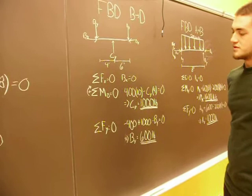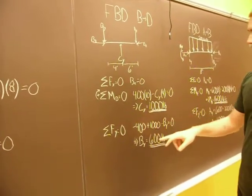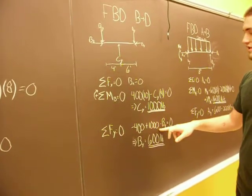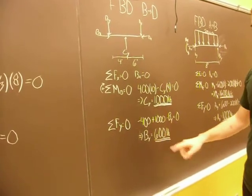Next you sum of the forces in the Y equals zero. You got your negative 400 from your DY, your 1000 from your CY, minus your BY because your BY is acting down. And your BY is 600 pounds.